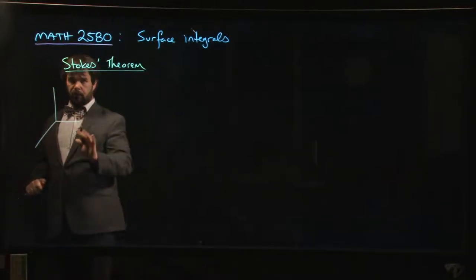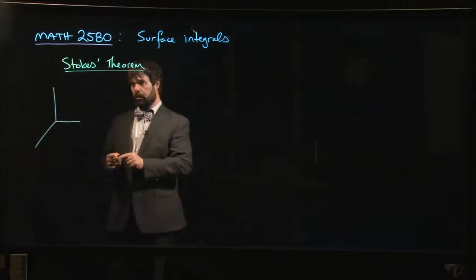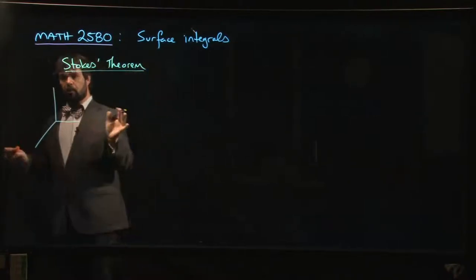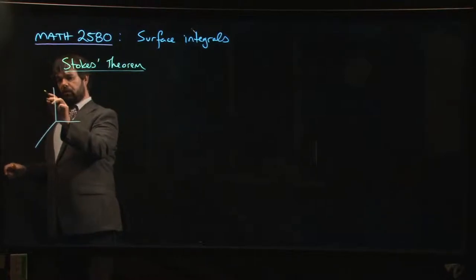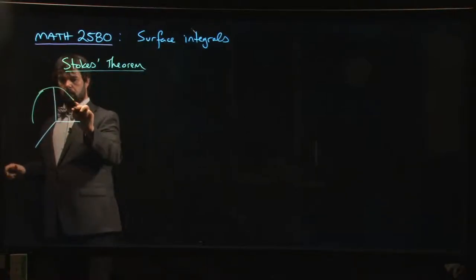And now we're dealing, it's not a closed surface like in the case of the divergence theorem, right? So this time the surface is not the boundary. The surface will have a boundary. So we have some kind of surface, and it's got a boundary, something like this.